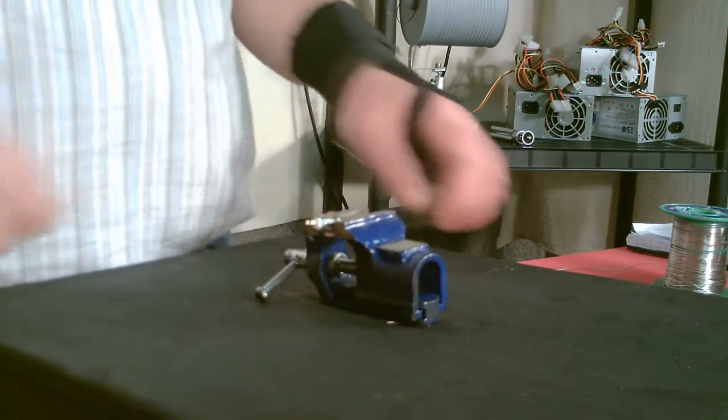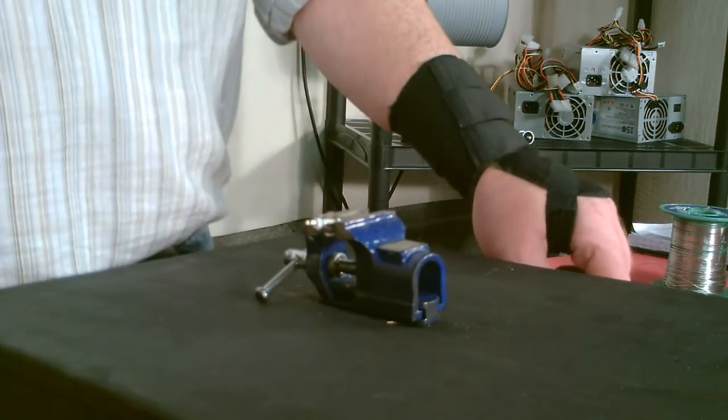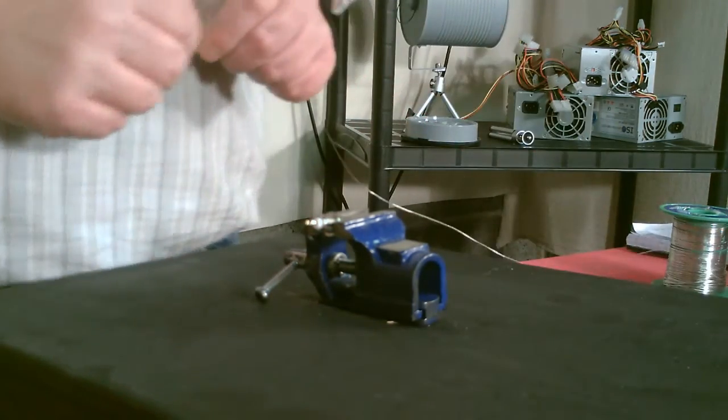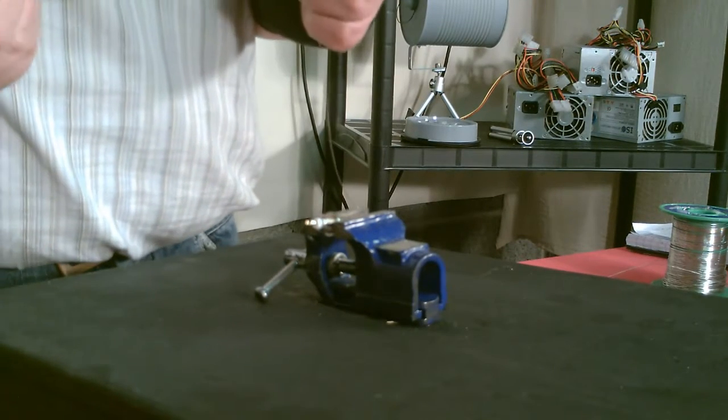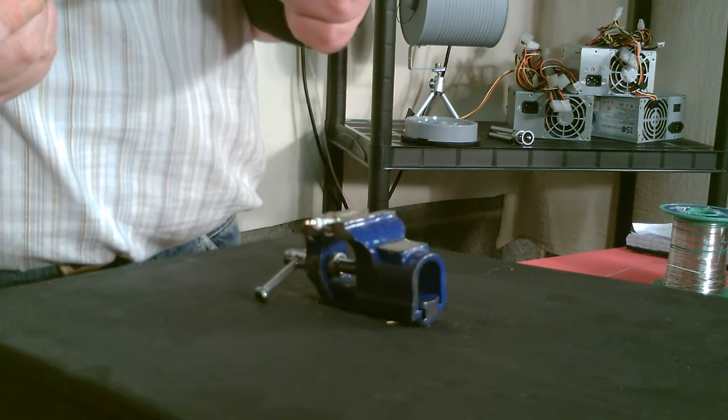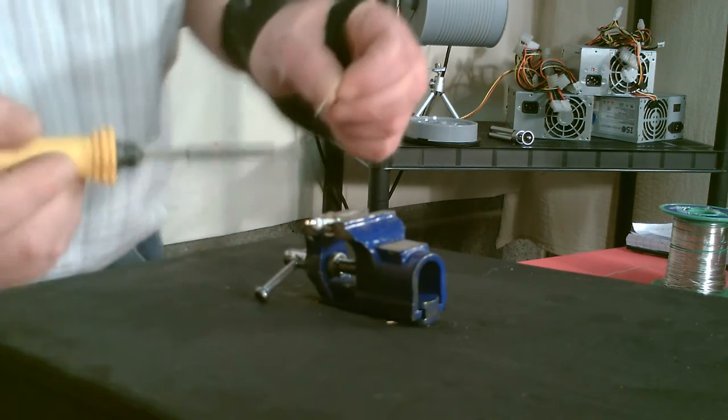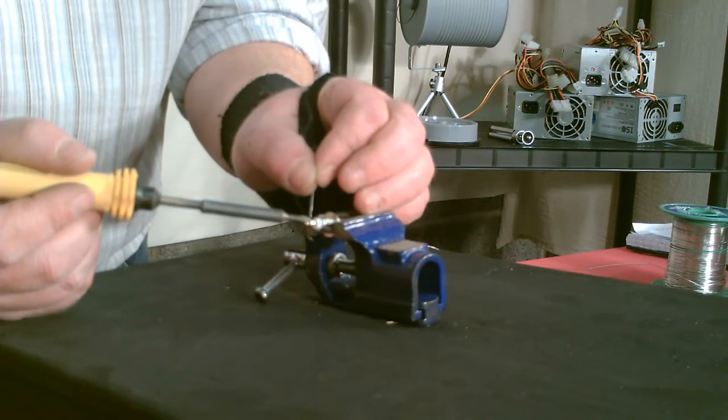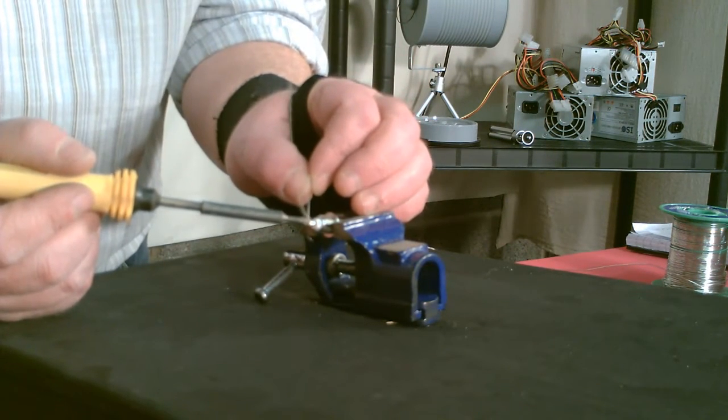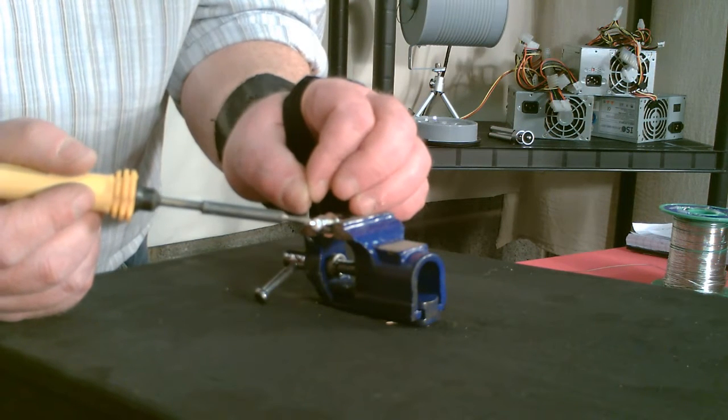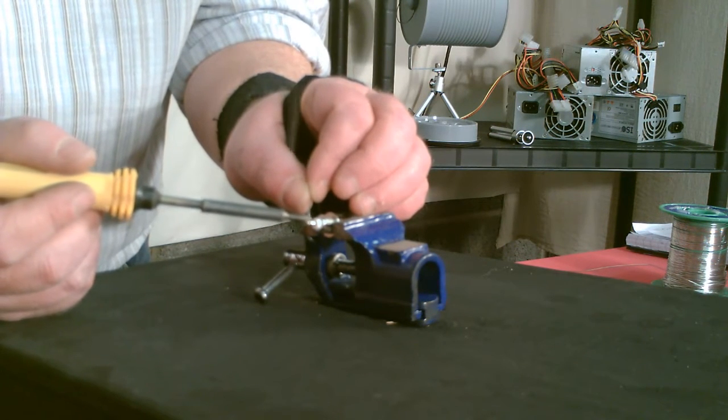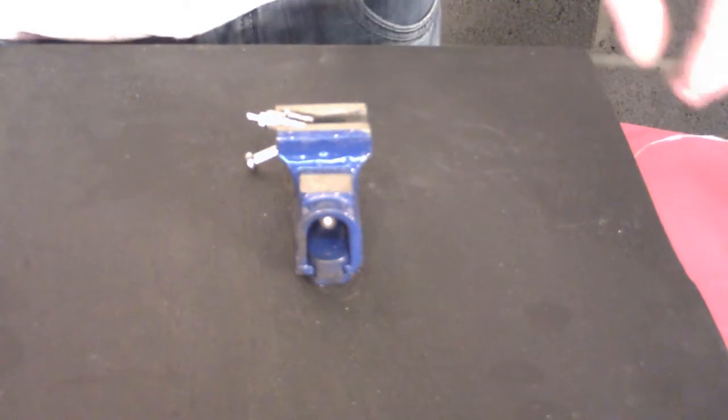So what we're going to do, we're going to fill up this solder cup and then solder this onto here. I'll just feed in a liberal amount of solder into the solder cup.